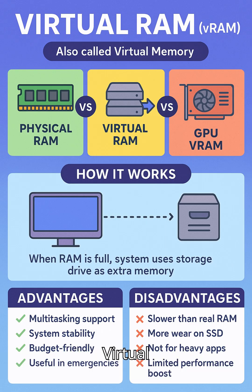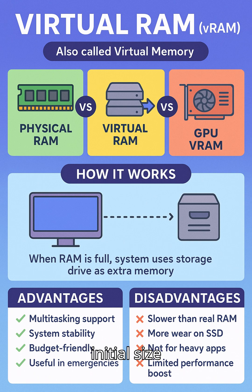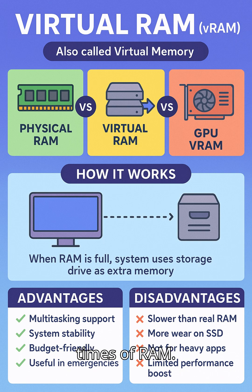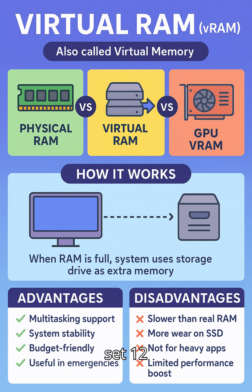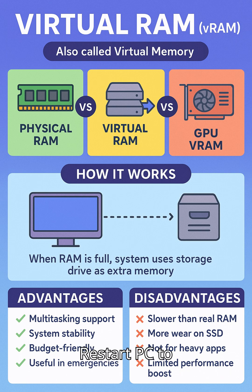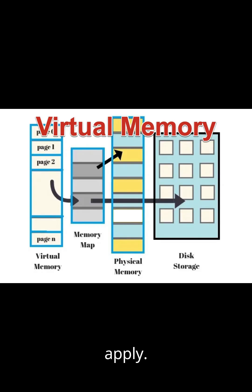Click Change Virtual Memory and uncheck Automatically Manage. Set the Initial Size and Maximum Size — usually 1.5 to 3 times your RAM. For example, if you have 8GB RAM, set 12GB to 24GB of Virtual Memory. Restart your PC to apply.